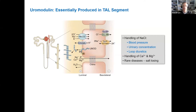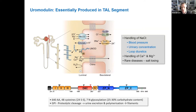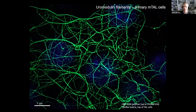The tubule is also very important for generating the gradient allowing us to concentrate the urine. It is exactly in these tubular cells that uromodulin is produced and secreted through the apical membrane. The protein is extremely rich in cysteine — you have 48 cysteine residues. There is also a lot of glycosylation sites, and this is a zona pellucida domain protein, characteristic of extracellular matrix proteins. When uromodulin is cleaved into the urine, it forms filaments that make the matrix of all casts in the urine, trapping different types of cells.